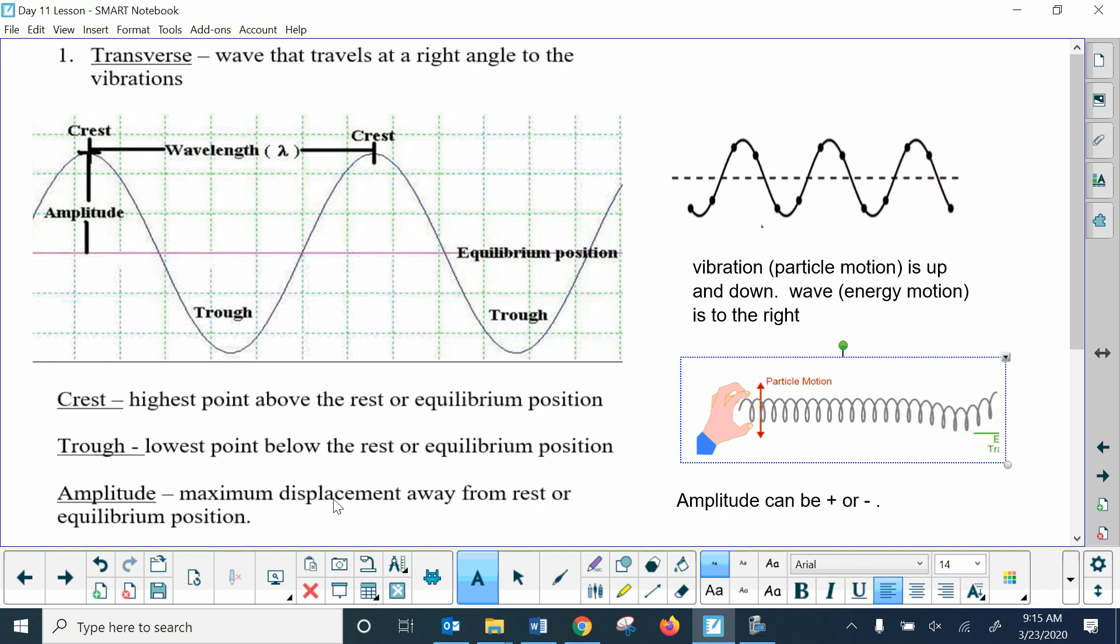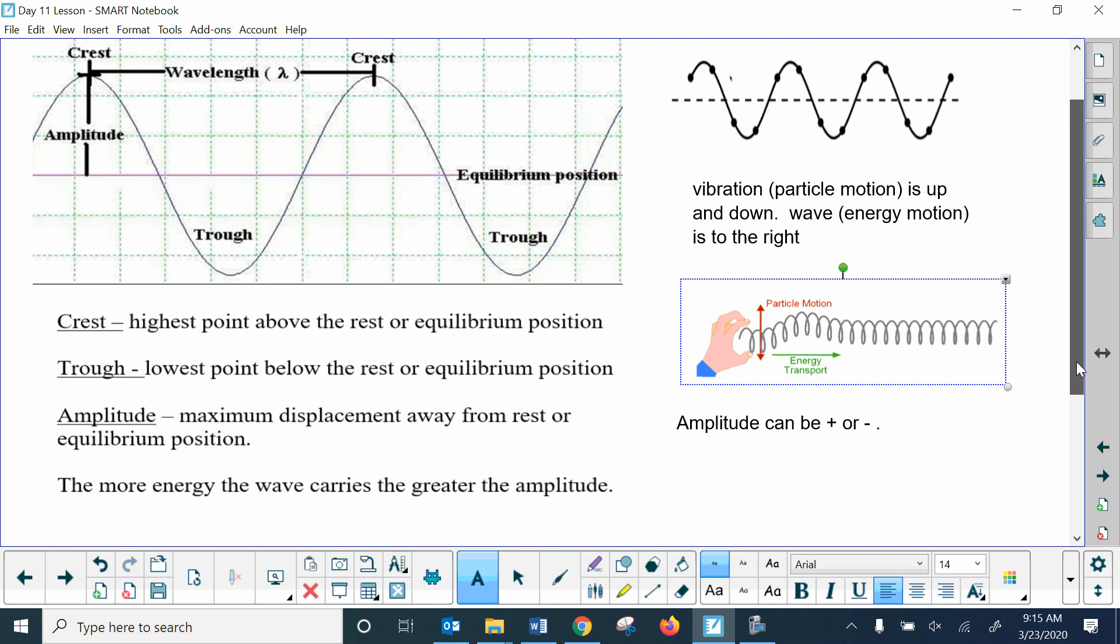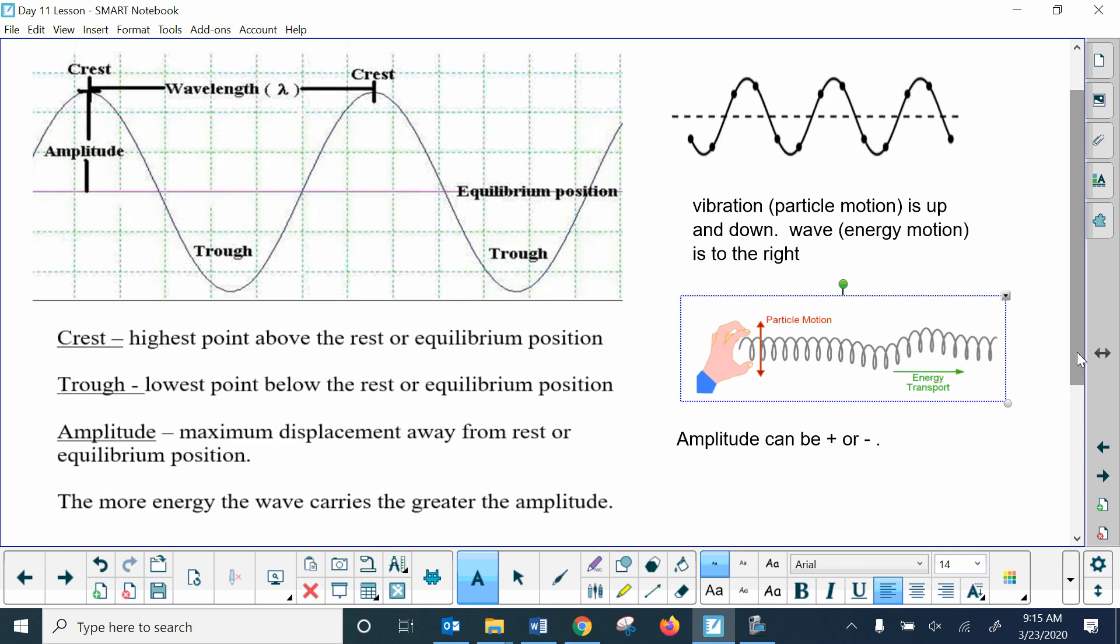The amplitude is the distance between that equilibrium position and the crest. It can be positive or negative. Amplitude is a measure of energy. So the bigger the wave, the more energy. If you imagine standing at the beach and a wave hitting you, the bigger the wave, the more energy it has, and the more change it can do to your matter. The more energy the wave carries, the greater the amplitude.